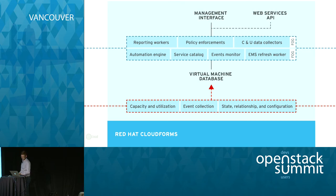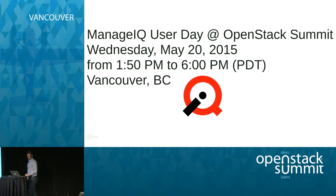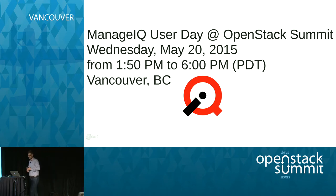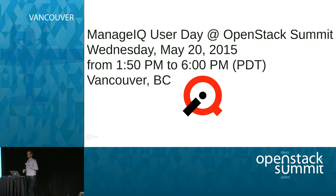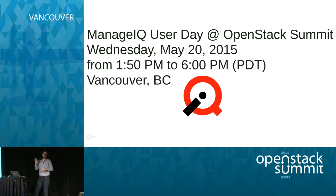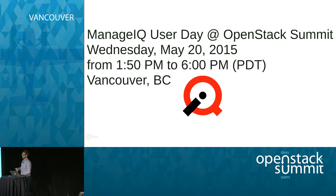CloudForms is built on a modern framework — it does capacity utilization, event collection, state relationship configuration across a number of infrastructure platforms, and provides these up into a virtual machine database, with a management interface and a northbound web services API. If you're interested in learning more about ManageIQ, there's actually a ManageIQ day here with a couple of labs — hands on the keyboard — running in something called Ravello, which runs on top of Amazon Web Services. So we have a full OpenStack environment with CloudForms that you can leverage for a lab, walking through tenant workflows, service catalogs, and all those pieces.